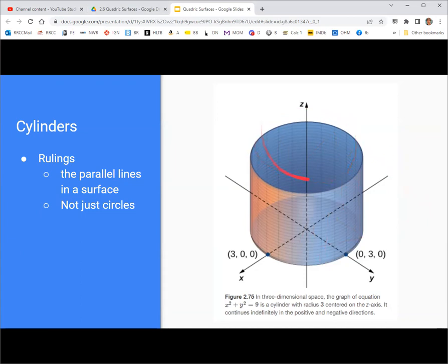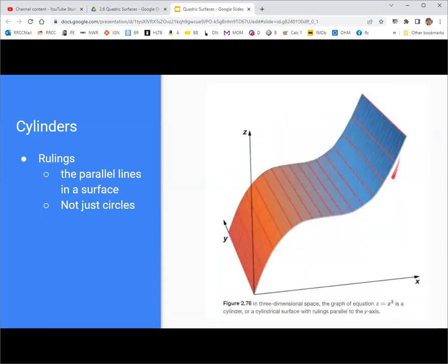Instead of a circle as a cross section, it could be some curve like this cubic function z equals x cubed. You take that shape, which is clearly not a circle, and extend it with these parallel lines, which are the rulings, and this would still be considered a cylinder or a cylindrical surface. In advanced math, we generalize the idea of a cylinder to beyond that of a right circular cylinder.